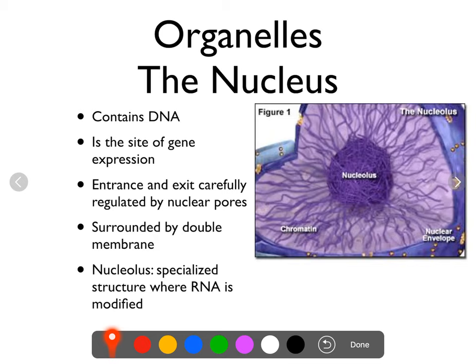The nucleus is where gene expression takes place. The nuclear DNA stays in the nucleus — there's no real reason for it to leave. If you need to access it, you copy it into RNA and then that RNA leaves through one of the pore complexes.